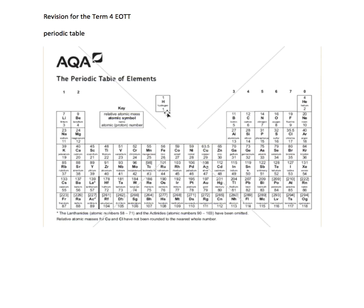Hydrogen stands out on its own. The group number is the number of electrons in the outer shell. So all of group 1 have got 1 electron in the outer shell, all of group 2 have got 2, then 3, 4, 5, 6, 7.